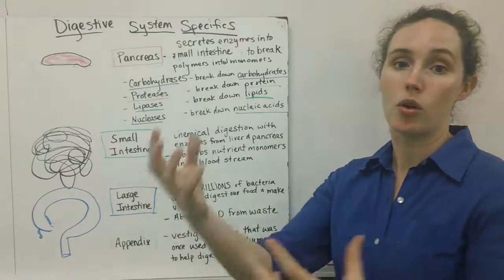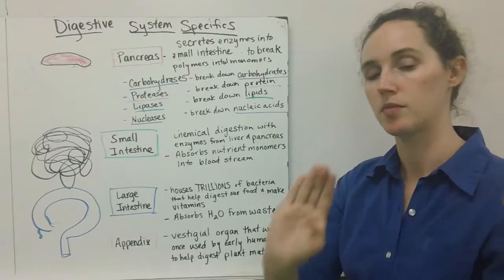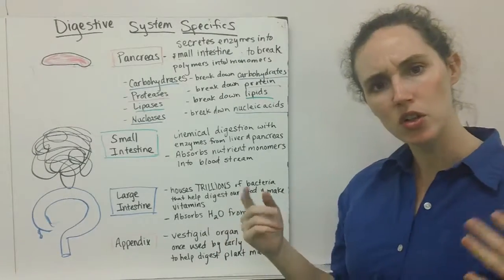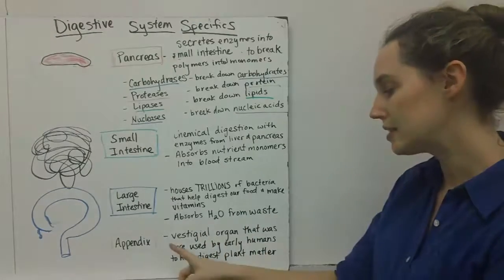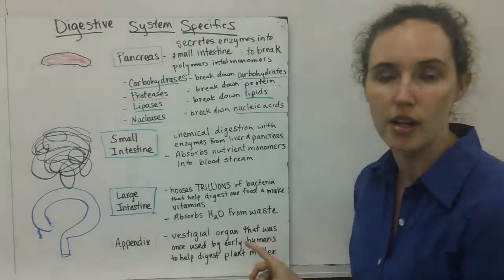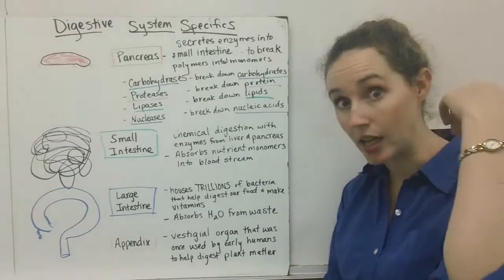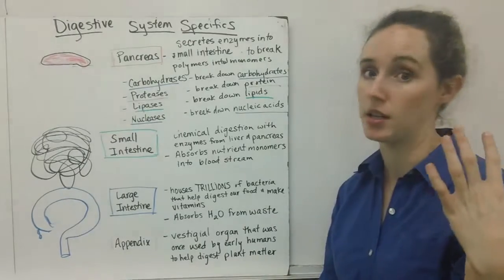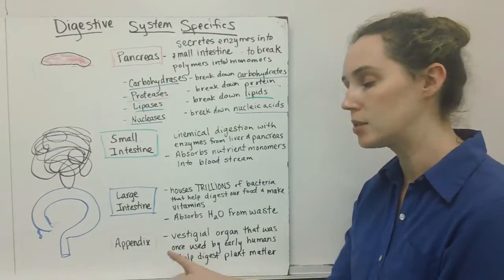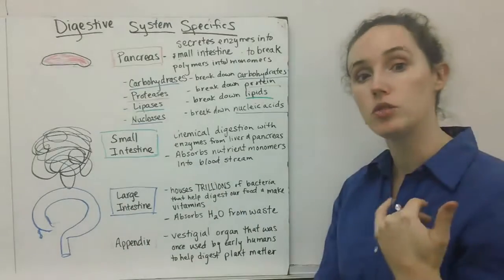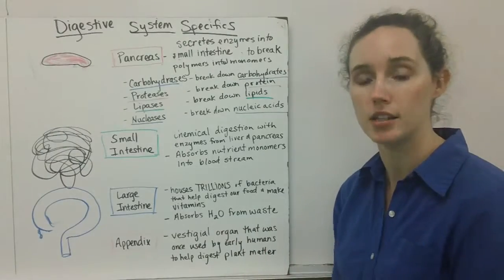Finally, all the leftover waste is stored in the rectum and expelled through the anus. But there's also this little organ called the appendix, and the appendix is a vestigial organ. Vestigial means it used to have a role back in evolutionary history; it used to have a job in our body, but now it doesn't. The appendix, back in early humanity, used to help us break down plant material like cellulose, which is very hard to digest.